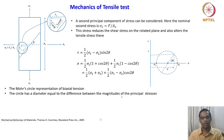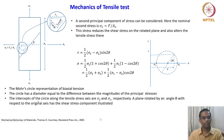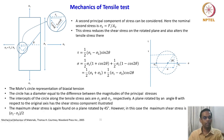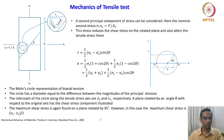The Mohr circle has a diameter equal to the difference between the magnitudes of the principal stresses (σ₁ − σ₂). The intercepts of the circle along the tensile stress axis are σ₂ and σ₁. A plane rotated by angle θ with respect to the original axis has a shear stress component, plotted at 2θ. The maximum shear stress is again found on a plane rotated by 45°; however, in this case, the maximum shear is (σ₁ − σ₂)/2, not σ₁/2 as in the uniaxial case.